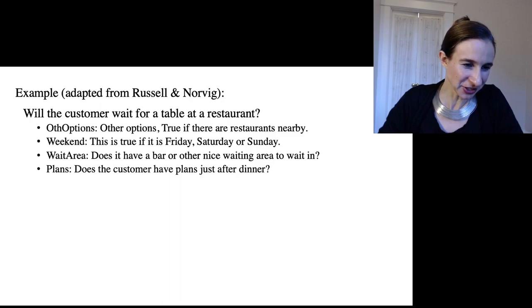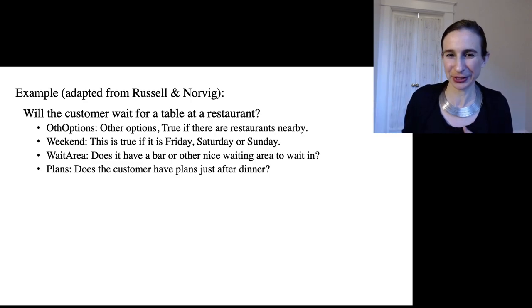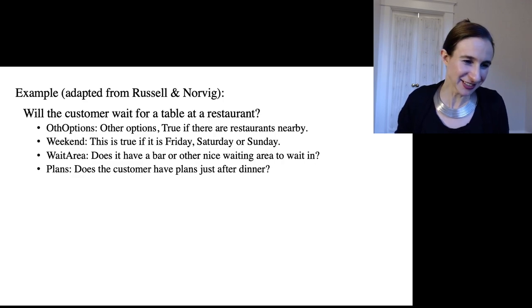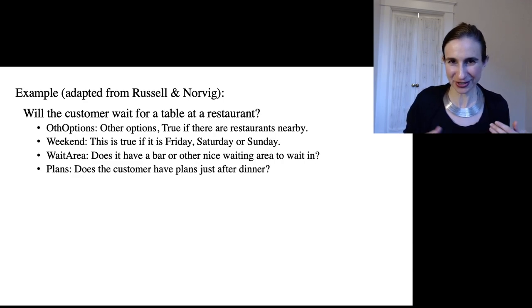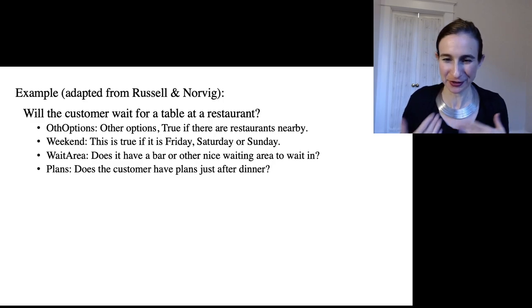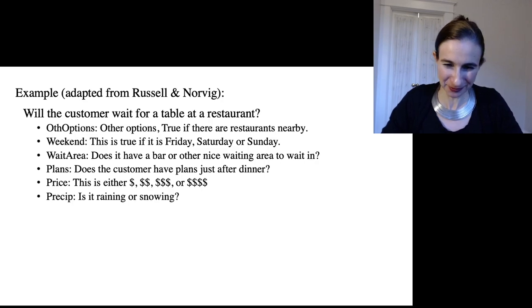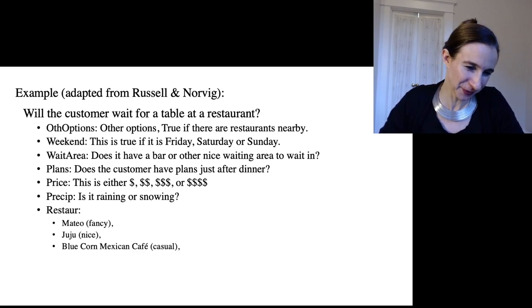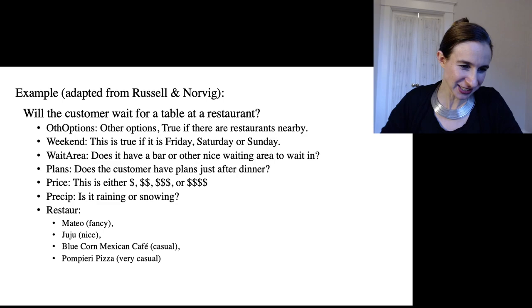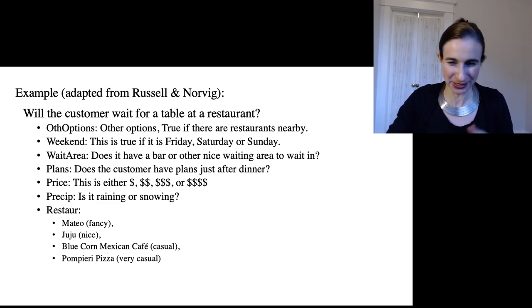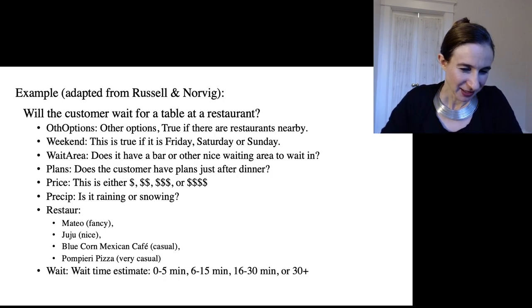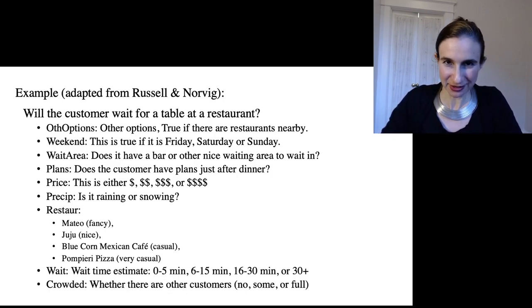I'm just listing all the features, so the features are things like whether there's another restaurant nearby and the customer could go there instead, whether it's a weekend, whether there's a waiting area in the restaurant where the customer would feel comfortable waiting, whether the customer has plans after dinner, the price of the restaurant, some information about the weather, and then which restaurant it is. I just picked four nice restaurants—Mateo is fancy and Juju is very nice and Blue Corn Cafe is casual and there's a pizza restaurant that's very casual—and then the wait time and then whether or not the restaurant is crowded.